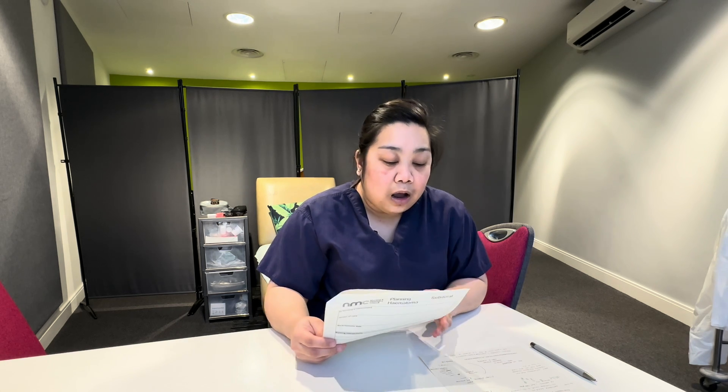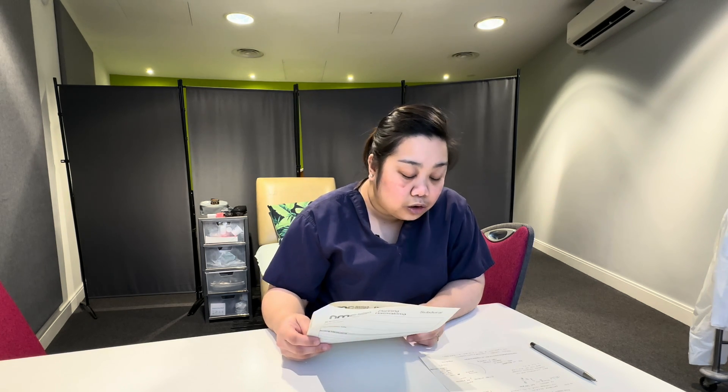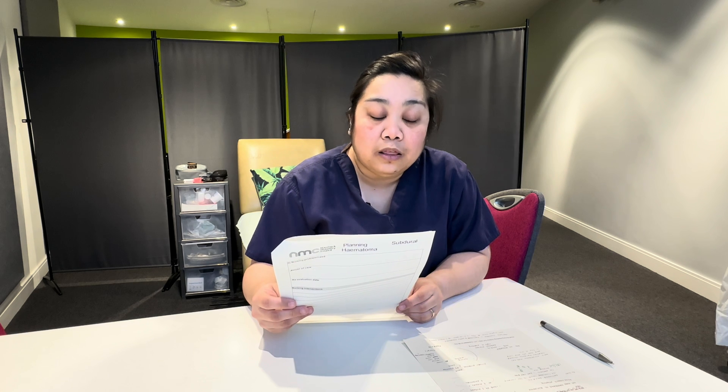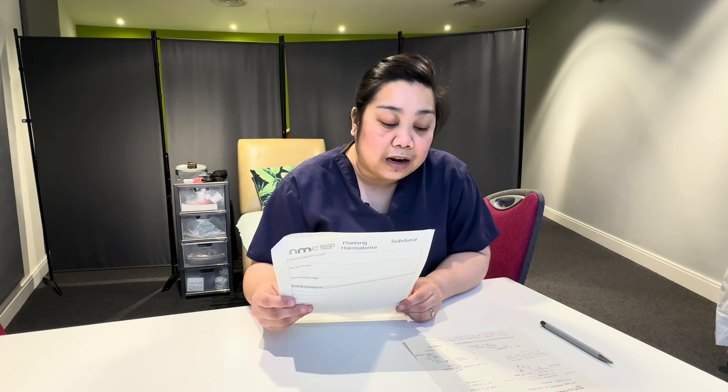For example, our first actual problem is pain. What I'm going to write is: Marjorie Ecclestone is experiencing severe headache with a pain score of 7 out of 10, bearing in mind that 0 is no pain and 10 is the worst pain. When you write your evidence for whatever problem it is — whether related to observations, vital signs, or pain — you should write your range, so 0 is no pain and 10 is worst pain.